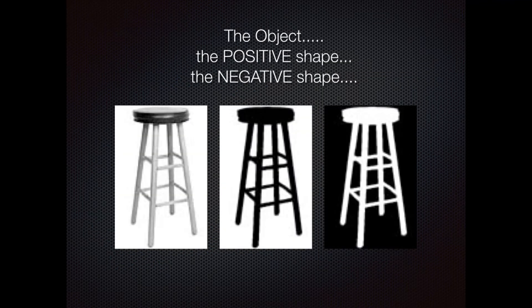Check out these three objects. In the first one on the left, the stool is the positive shape. In the middle image, the stool is also the positive shape and is shown in black — so that is the stuff.